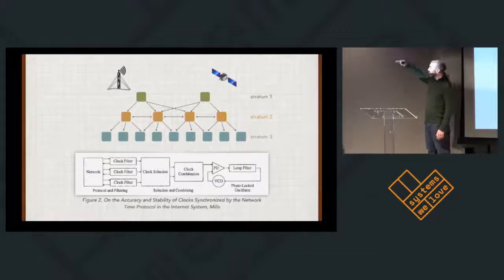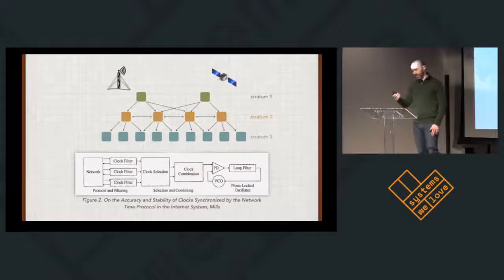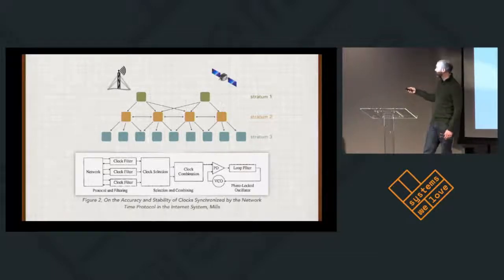It's designed as this tree structured system, they call them strata. Stratum 1 attaches to the authoritative sources and then stratum 2 attaches to stratum 1, 3 to 2, etc. What I'd like to do today is walk you through how NTP actually does this time transfer over the network. That's this diagram at the bottom and we're going to step through it except for the phase locked oscillator because I don't yet understand that math.